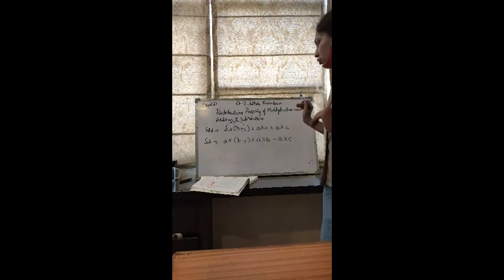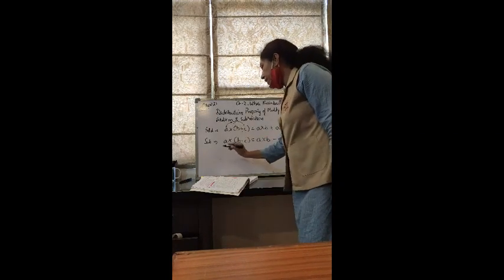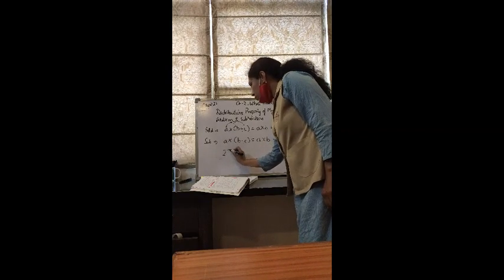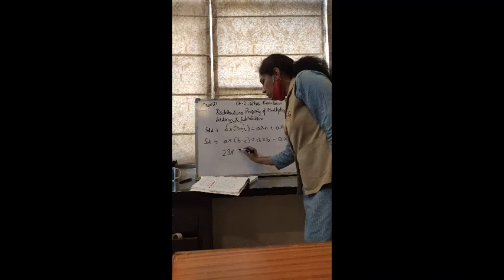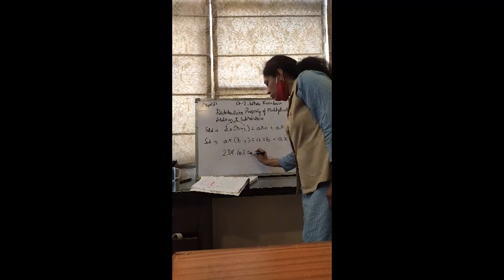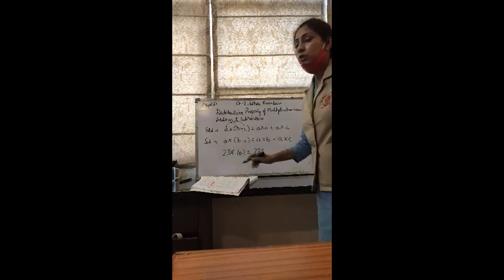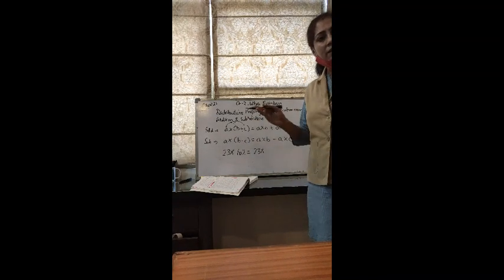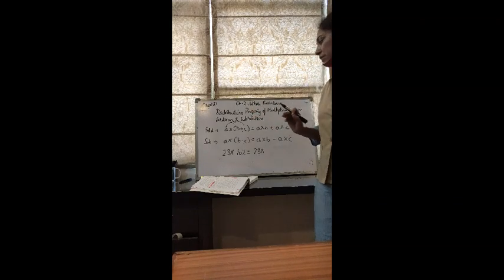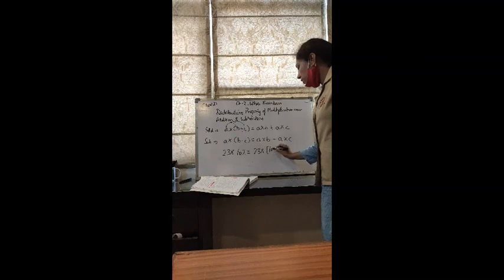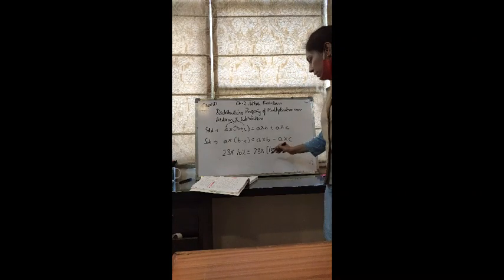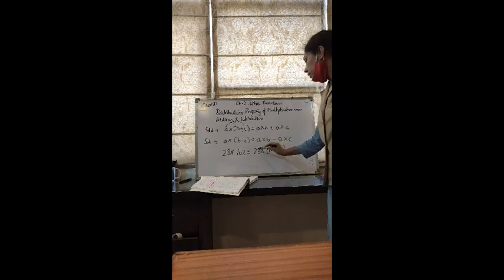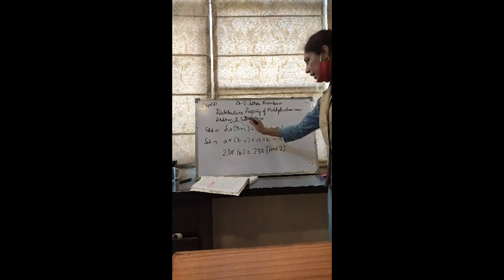First, let me give you an example to make it clearer. For addition: if I say multiply 23 into 102, you will say 102 is a bigger number. This is the use of this property — when you multiply a bigger number, you split it into two parts so the calculation becomes easier. We can write 102 as 100 plus 2. It holds the same value 102, and it will come out from the bracket.